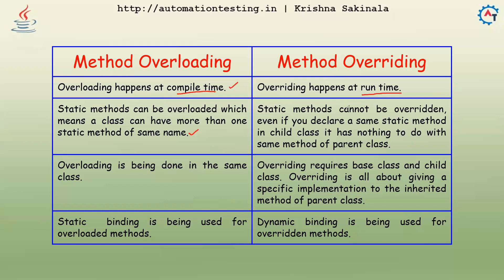Static methods cannot be overridden. Even if you declare a same static method in a child class, it has nothing to do with the same method of the parent class. Static is only applicable to the class — if you want to access it, it will be with the class name, nothing to do with the object.